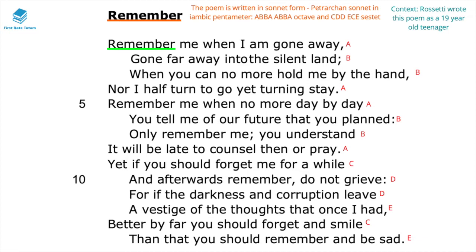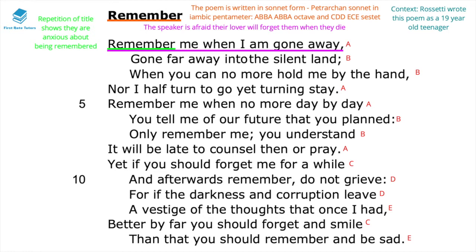When we look at line one, 'Remember Me When I'm Gone Away,' the repetition of the title word 'Remember' shows that the speaker is really anxious about being remembered by the lover. The whole line emphasises that the speaker is really fearful that the lover may forget them once they die. Furthermore, the repetition of 'Gone' focuses on the death and distance making the speaker anxious. The reference to 'Gone Away' is a euphemism for death — the speaker is contemplating whether the lover will remember them once they die.